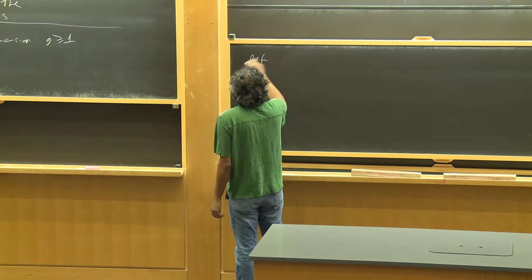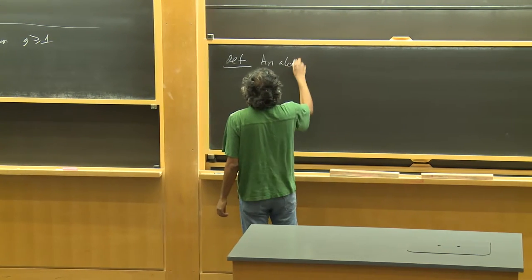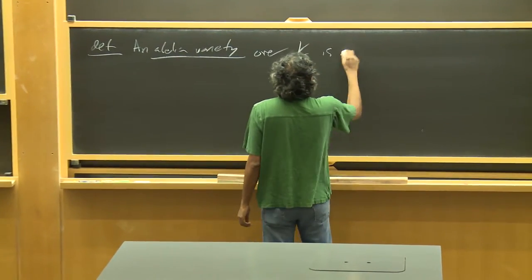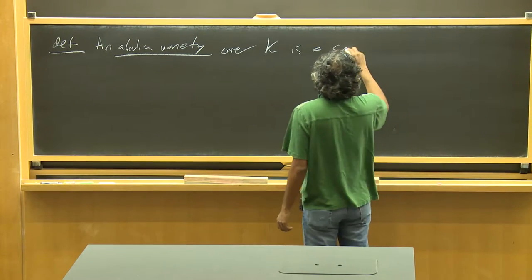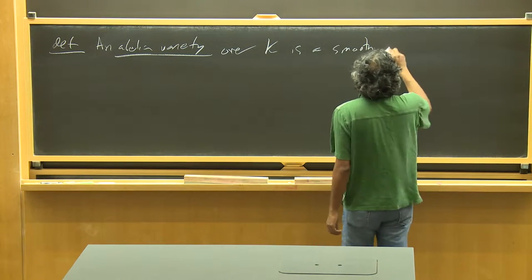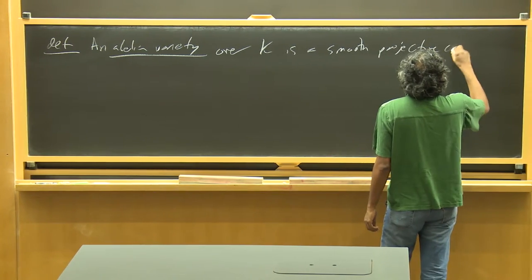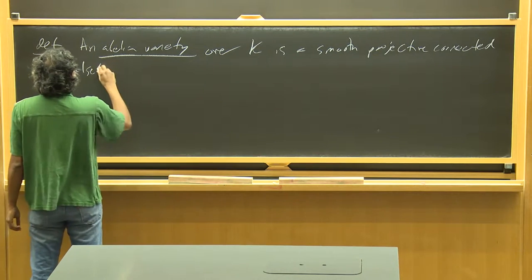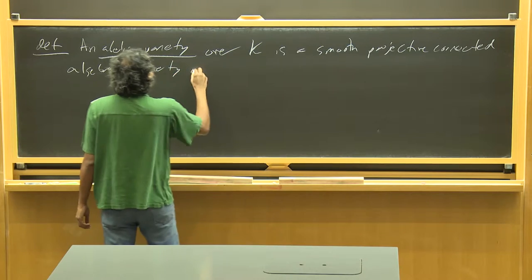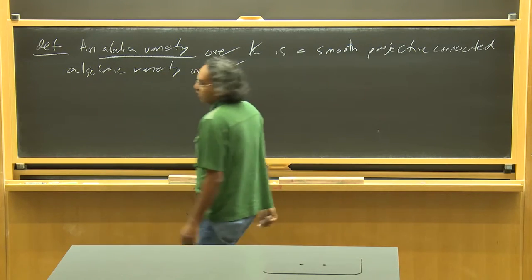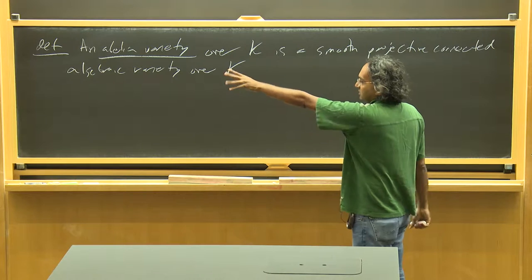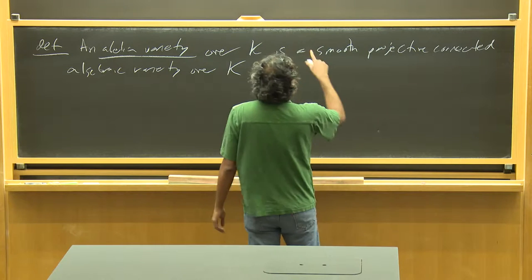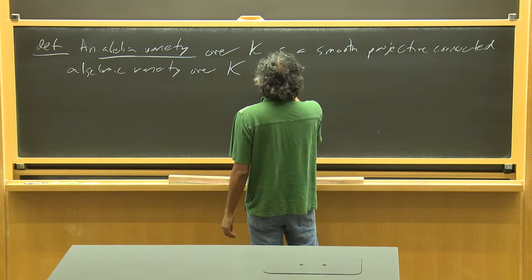So what is an abelian variety? It's a smooth, projective, connected algebraic variety over the field k. You can also talk about abelian schemes over other bases, but in this talk I'm only going to be working over a number field, so I don't need to say more than that. So it's going to be smooth, projective, connected, and it has a group structure.